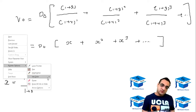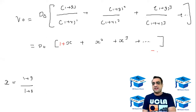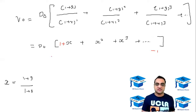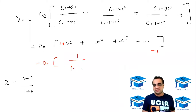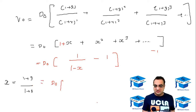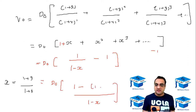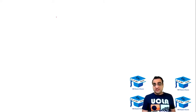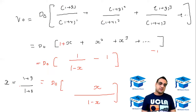There was a little confusion here, but it's clear we add one and then later subtract one. So one plus x plus x squared plus x cubed equals one upon one minus x. So D0 as it is, multiplied by one upon one minus x, minus one. The common denominator is one minus x, giving D0 into x upon one minus x. And x is one plus g upon one plus r.